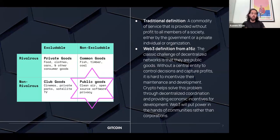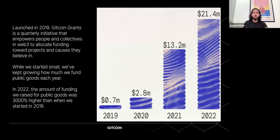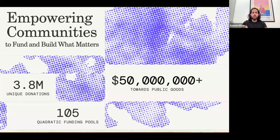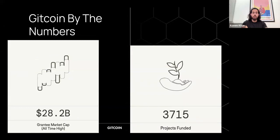Gitcoin Grants launched in 2019 and has been very successful — year on year, we've seen a massive increase in what we've been able to give out. Many of our grantees have come back and gone on to become funders of the program itself, which we call a 'graduation.' We've had close to 4 million unique donations in the last four years, many quadratic funding pools, an estimated $28 billion market cap valuation from funded projects, and close to 4,000 projects funded.